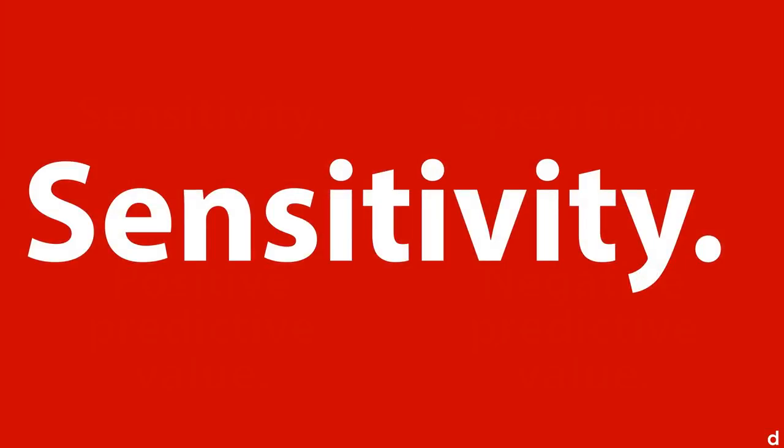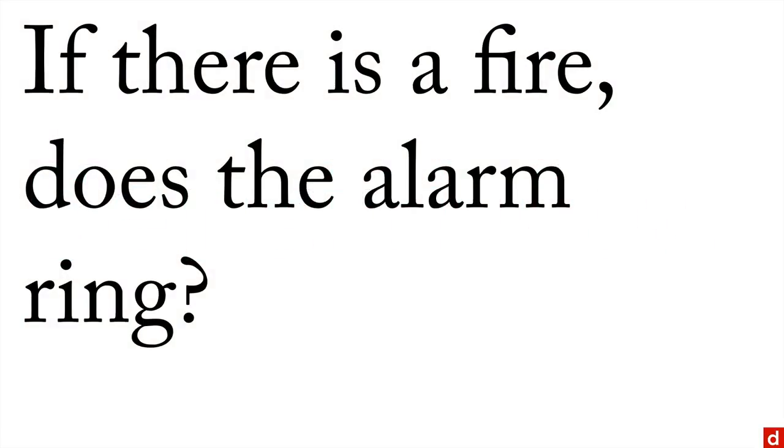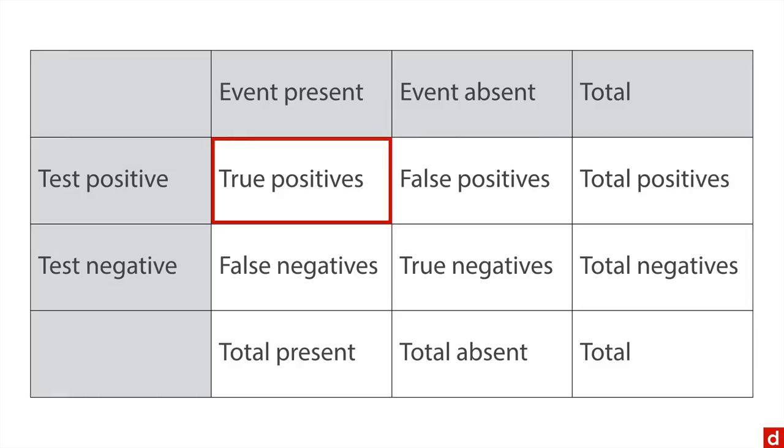Sensitivity can be expressed this way: If there's a fire, does the alarm ring? You want that to happen. And so that's a matter of looking at the true positives and dividing that by the total number of alarms. So the test positive means there's an alarm, and the event present means there's a fire. You want to always have an alarm when there's a fire.